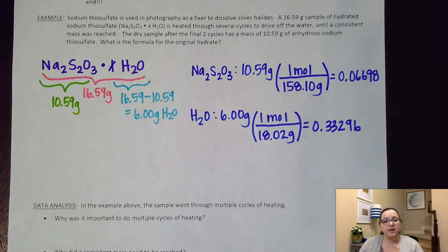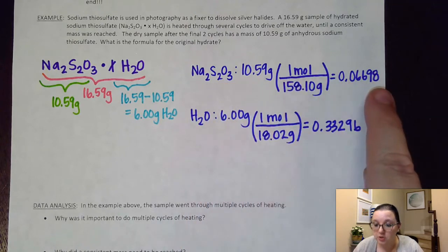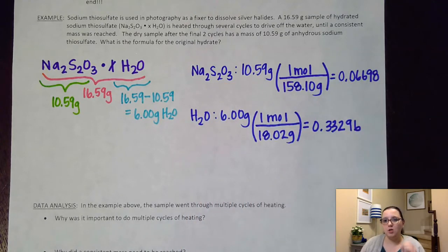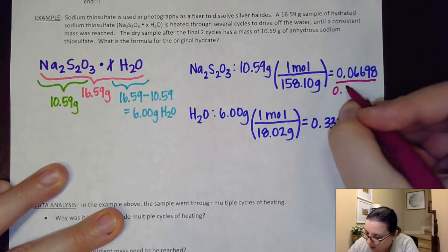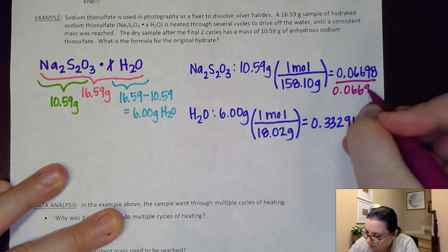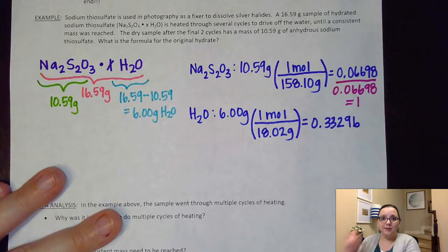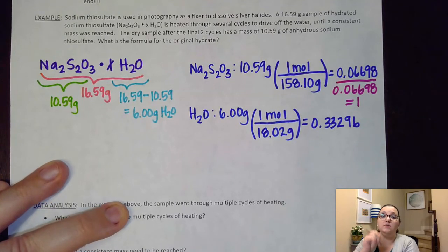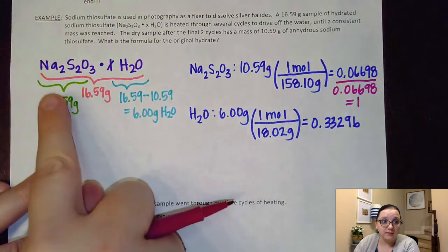All right, so did the mass to mole step. Next step in the saying is divide by the smallest. Now what you should see is that the ionic compound should always have the smallest number. The reason why is because I'm going to be able to divide by it and ensure that that comes out to be one. I want the coefficient in front of the Na2S2O3 to be one. I want one of that substance right there, and I want to figure out how many waters go along with it.